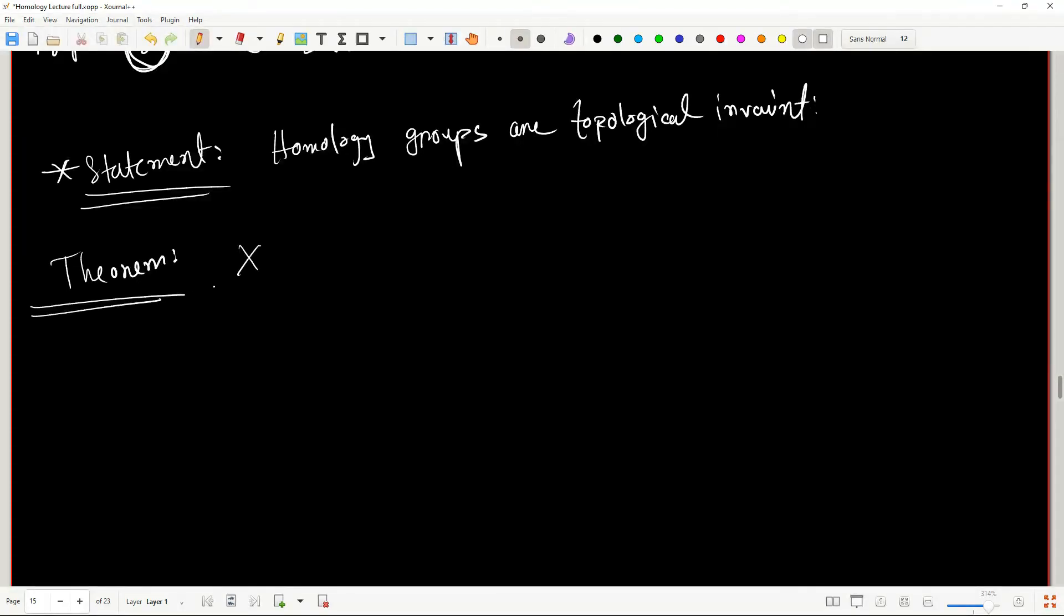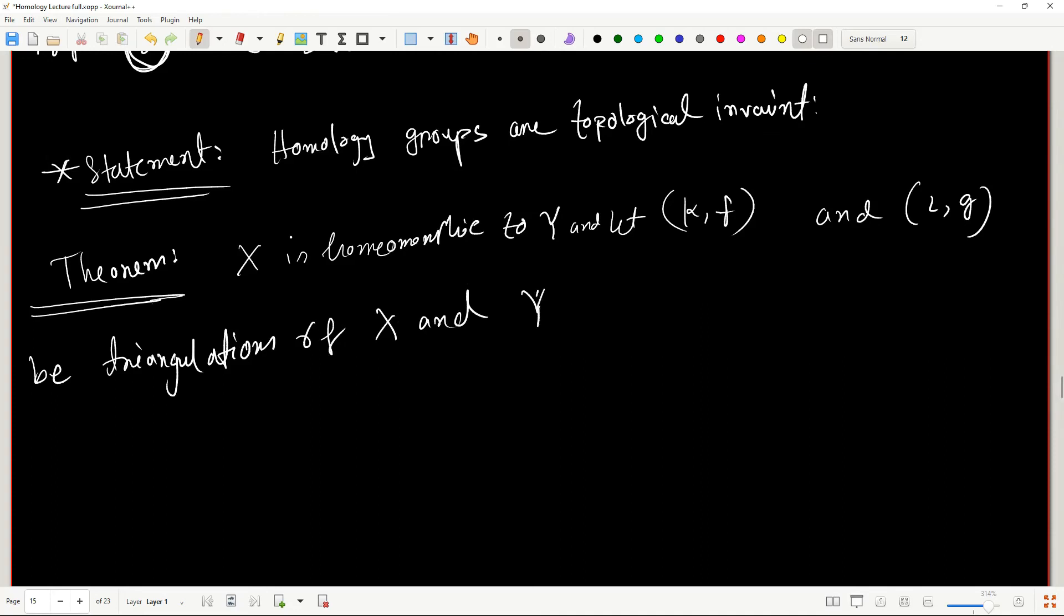So let's say X is homeomorphic to Y when X and Y both of them are topological spaces. And let K, F and L, G be triangulations of X and Y respectively. Then if this all is true, then the nth homology group on space X under some triangulation K is isomorphic to the nth homology group on Y under the triangulation L.